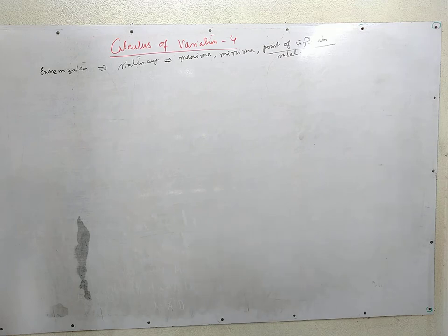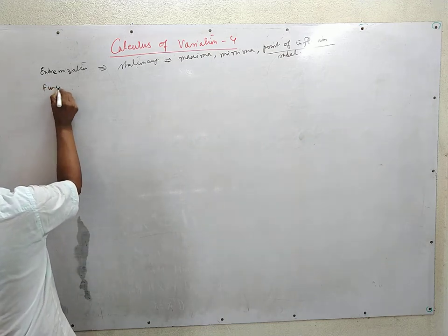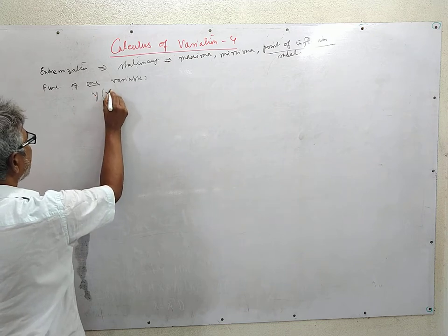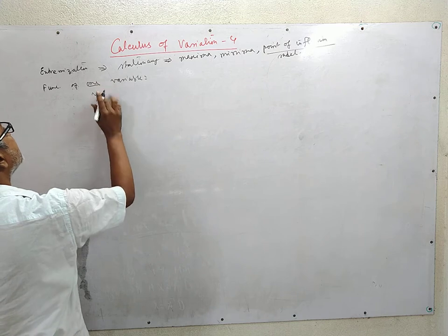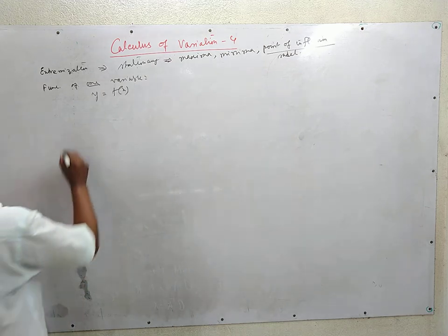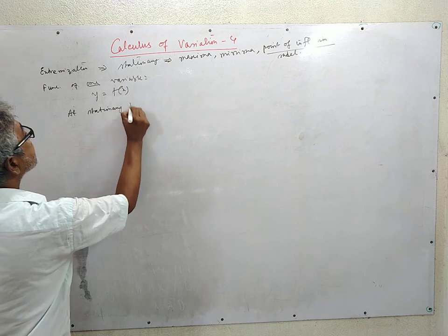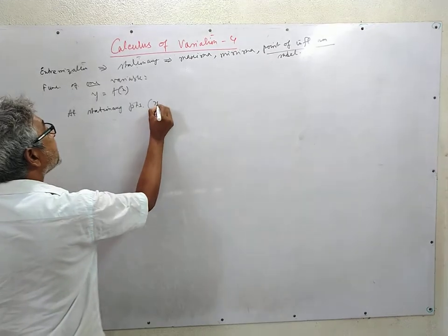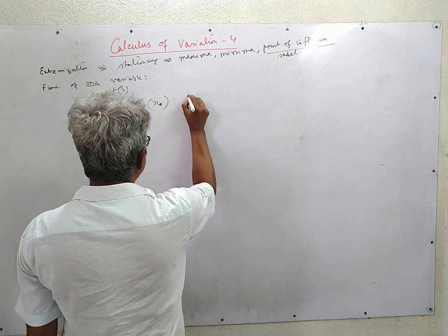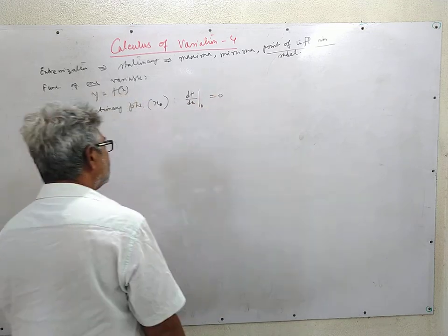In ordinary calculus, consider a function y of x — a function of a single variable. We consider y as a function of x, and for stationary values we have to find the values of x, say x₀. At stationary points x₀ — there may be more than one value of x₀ — we have df/dx evaluated at x₀ equal to zero.